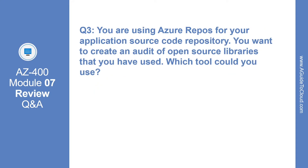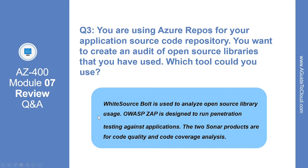You are using Azure Repos for your application source code repository and you want to create an audit of open source libraries that you have used. Which tool could you use? The correct answer is WhiteSource Bolt, which is used to analyze open source library usage. OWASP ZAP is designed to run penetration testing against applications, and the two Sonar products are for code quality and code coverage analysis.